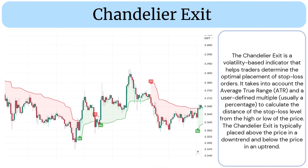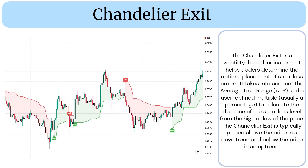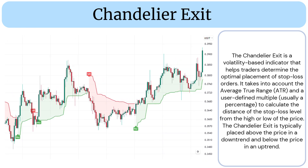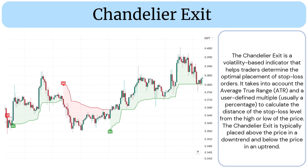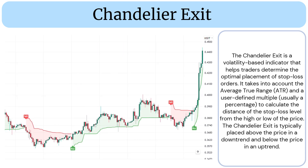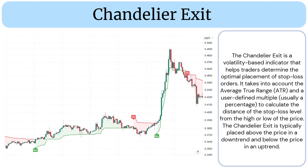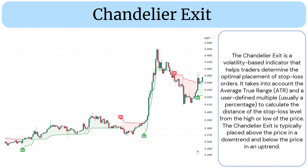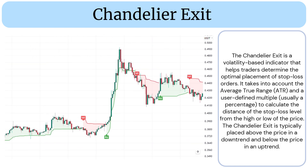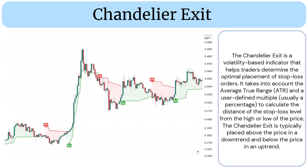The Chandelier Exit is a volatility-based indicator that helps traders determine the optimal placement of stop-loss orders. It takes into account the Average True Range (ATR) and a user-defined multiple, usually a percentage, to calculate the distance of the stop-loss level from the high or low of the price.